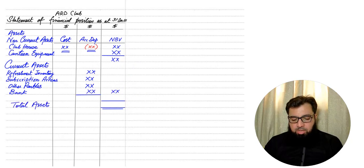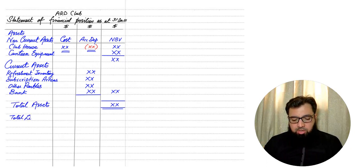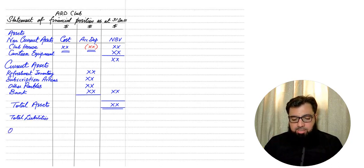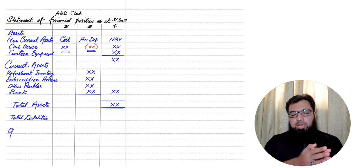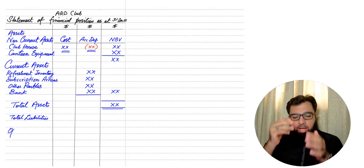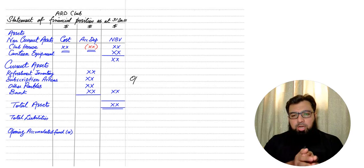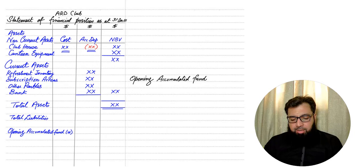Adding all current assets gives the total, and adding non-current assets and current assets gives total assets. Now, in a not-for-profit organization or club accounts, we never use the word 'capital'. Instead of writing 'capital and liabilities' as a heading, we write only 'liabilities'. And instead of writing 'opening capital' in the capital section format, we write 'opening accumulated fund'. Accumulated fund is an alternate name for capital used in a not-for-profit scenario.